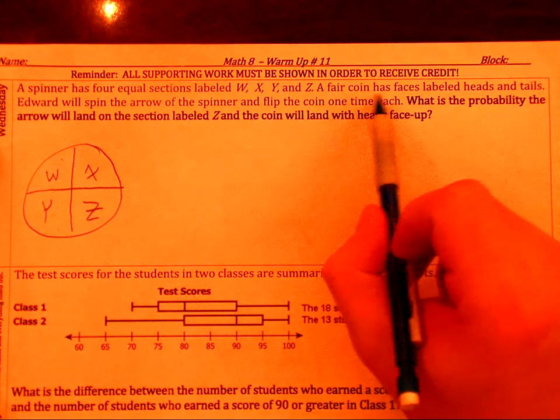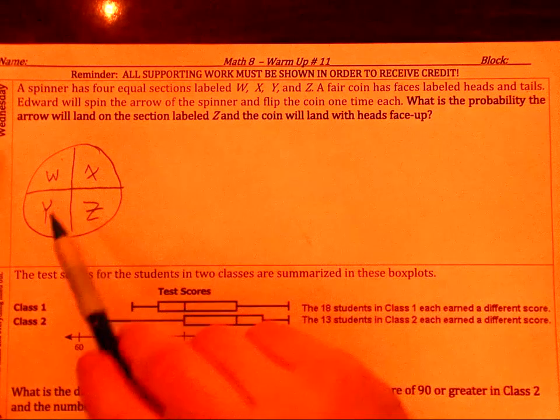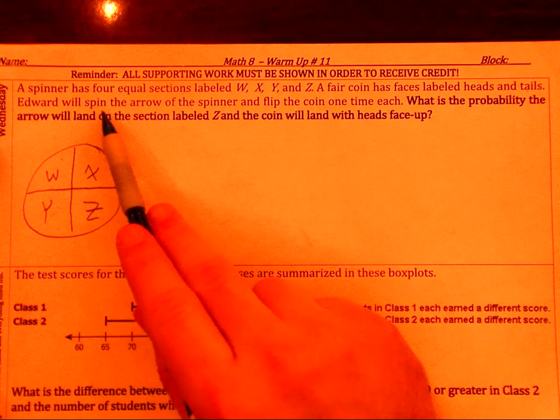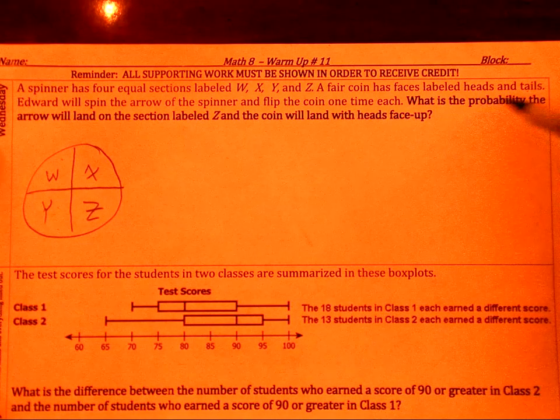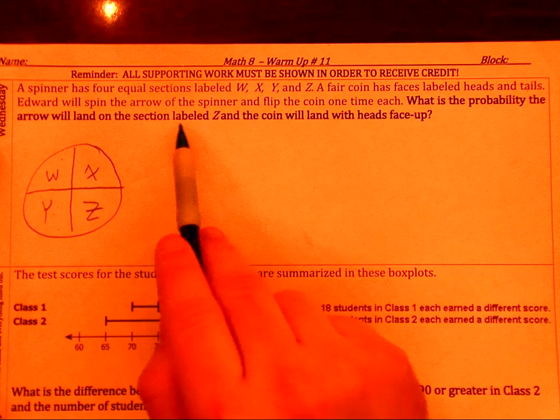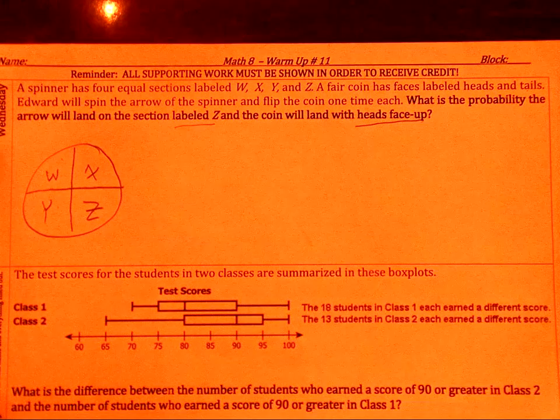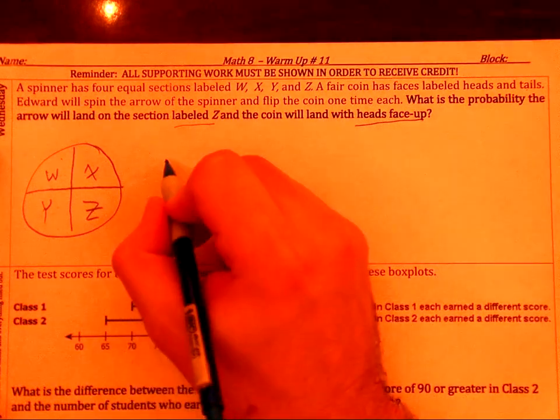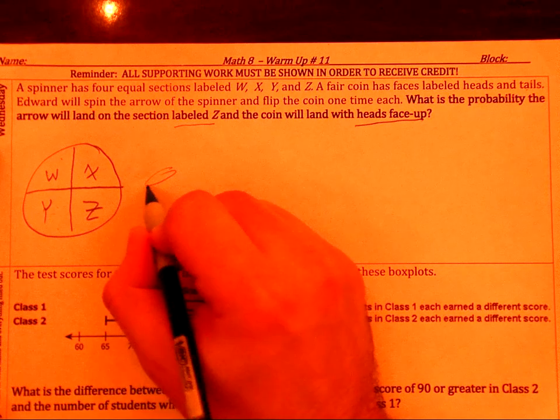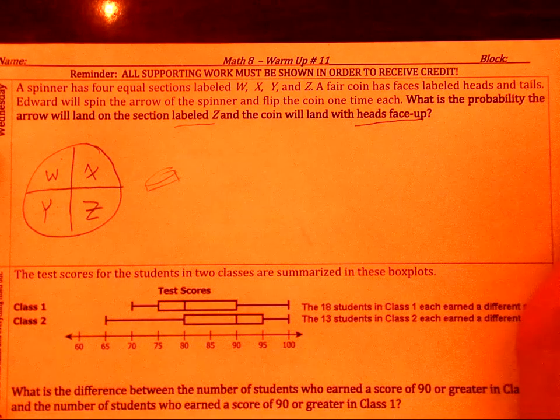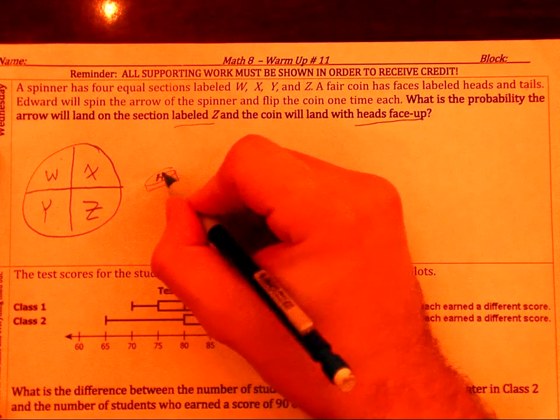And that says a fair coin, meaning it has equal sides with heads and tails. Edward spins the arrow of the spinner and flips the coin each time. What is the probability the arrow will land on a section labeled Z, and the coin will land with heads face up? So again, you have your coin. If you wanted to draw it out, it has two sides. As long as you understand that one side is heads, where the other side would be tails.